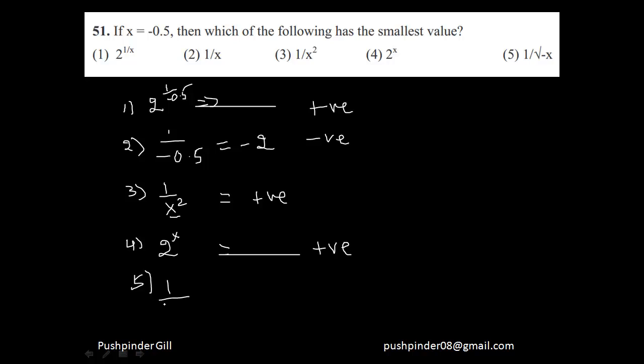Similarly, 1 upon under root of minus of minus 0.5. An under root of a positive number will give you a positive number. So that means this is also going to be positive and my answer is going to be the second option.